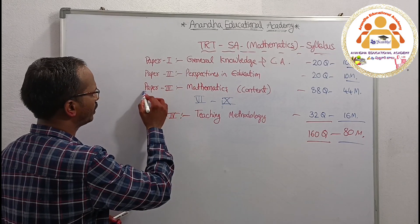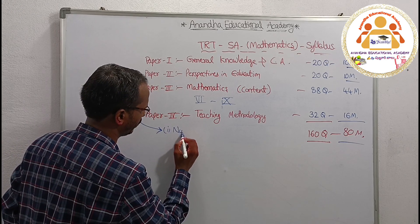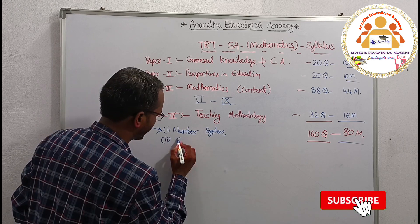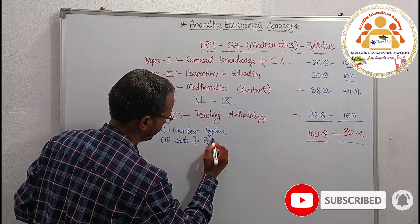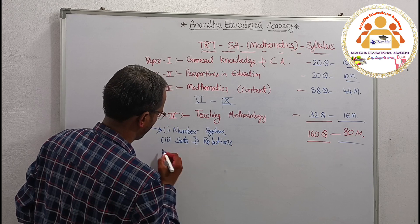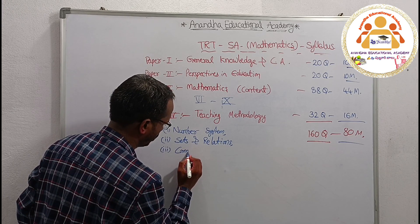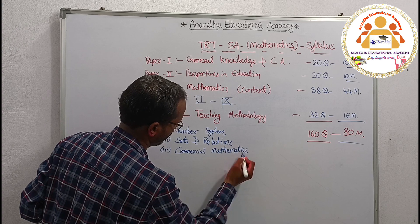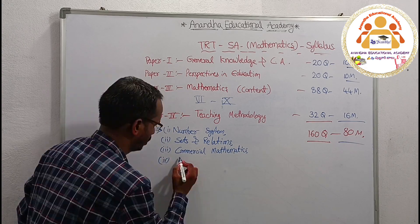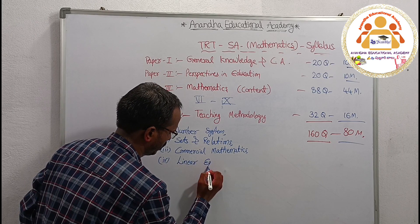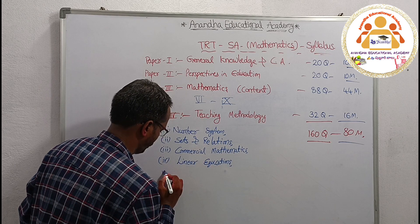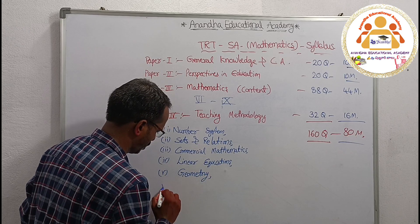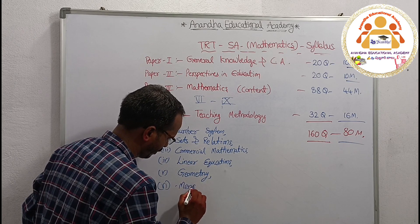Now I will write the content subtopics and chapters here. First: Number Systems. Second: Sets and Relations. Third: Commercial Mathematics. Fourth: Linear Equations. Fifth: Geometry. Sixth: Mensuration.